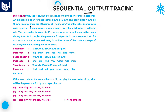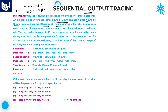Let's see the problem. First, the information: an exhibition is open for public from 9 AM to 3 PM, and again from 4 PM to 10 PM. That means 9 AM to 3 PM is 6 hours, and 4 PM to 10 PM is also 6 hours — total 12 hours in a day. There are 12 batches of one hour each.